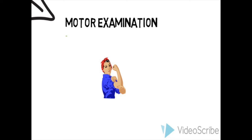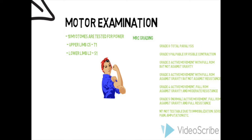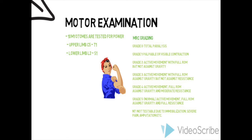The motor component of the examination determines the muscle power in 10 key myotomes. In the upper limb, C5 to T1 segments are tested. In the lower limb, L2 to S1 segments are tested. For each segment, the muscle power is graded from 0 to 5 according to the MRC grading. Grade 0 means total paralysis, grade 1 means there is a muscle twitch, grade 2 means full active range of movement with gravity eliminated, grade 3 means full active range of movement against gravity, grade 4 means the patient is able to generate some resistance, and grade 5 is normal strength. If the segment cannot be tested, it is given an NT grading, meaning it is not testable.